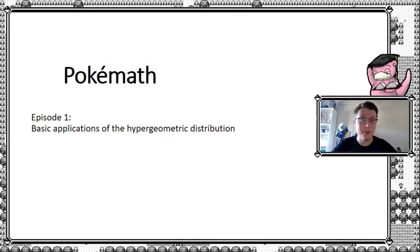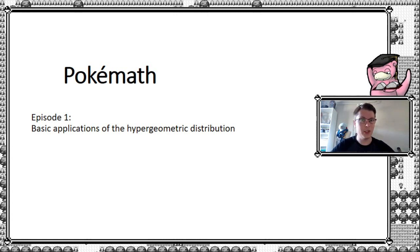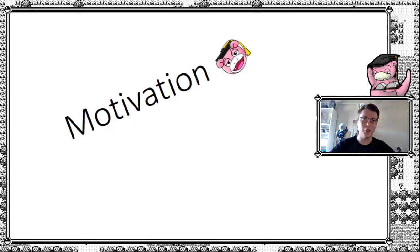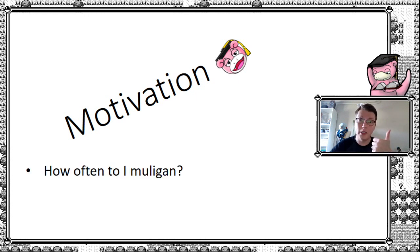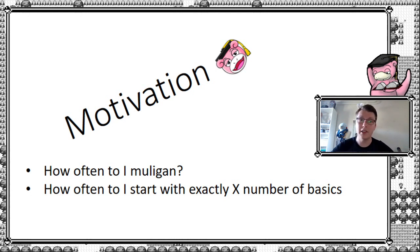So let's get started with the first episode. Today we're going to be looking at the hypergeometric distribution and how we can apply it into Pokémon TCG. The first question you might ask is: what can I even use this for? Having been playing for 16 years myself, I've been asked many times what is the chance of having a mulligan with a certain deck, or starting with X number of basics — say 1, 2, 3 or more.